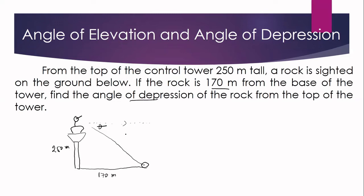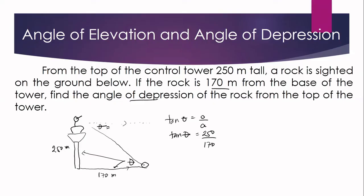Just like the previous problem, we have two horizontal lines and the line of sight as a transversal. So if we find the angle at the bottom of the triangle, that is also the angle of depression, since alternate interior angles are congruent. Looking at our illustration, we will use the tangent ratio again. We have tangent theta equals opposite over adjacent. The opposite side of theta is 250 meters and the adjacent side is 170 meters.